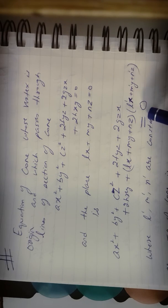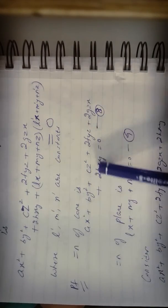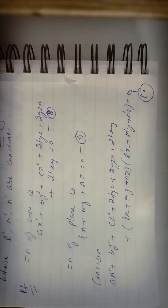The required equation is: ax² plus by² plus cz² plus 2f·yz plus 2g·zx plus 2h·xy plus (lx plus my plus nz)(l'x plus m'y plus n'z) equals zero, where l', m', n' are constants. The given equation of the cone and the given equation of the plane are combined in this formulation.